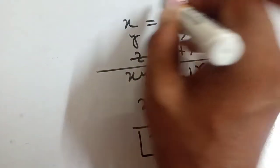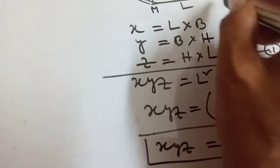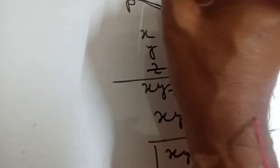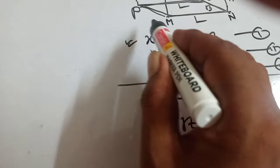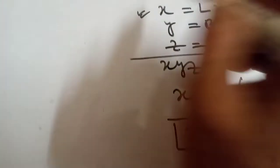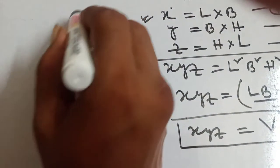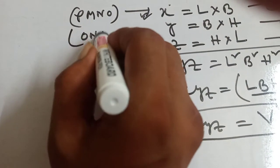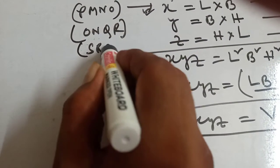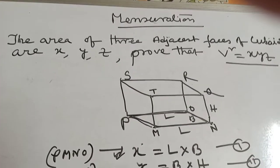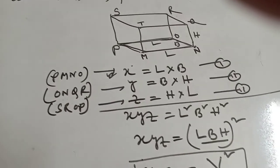First one part, this one. If you give MNOPQRST, first one x equals length into breadth. Length into breadth, breadth into height, breadth, back side length. This all are adjacent side, adjacent face. This is the area of PMNO. This is the area and this is the area of SROP. This one and this one. Area equals length into breadth. This is the most important sum, most understanding important sum.